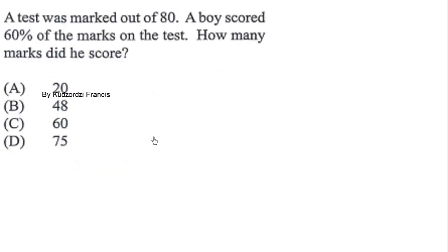Question 5: A test was marked out of 80. A boy scored 60 percent. We calculate 60/100 times 80, which is the same as 6/10. This cancels to 6 times 8, which equals 48. So the boy scored 48 questions out of 80.